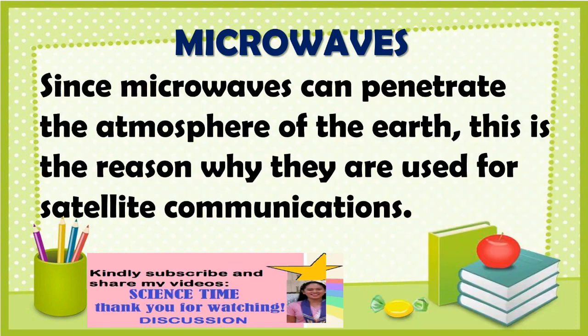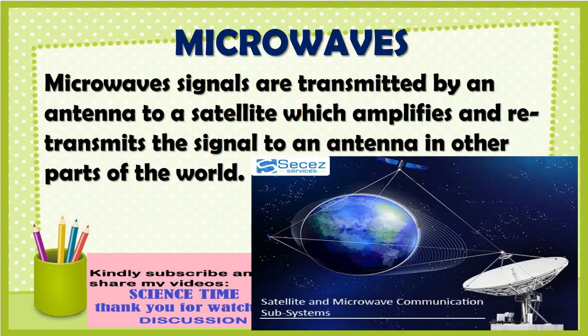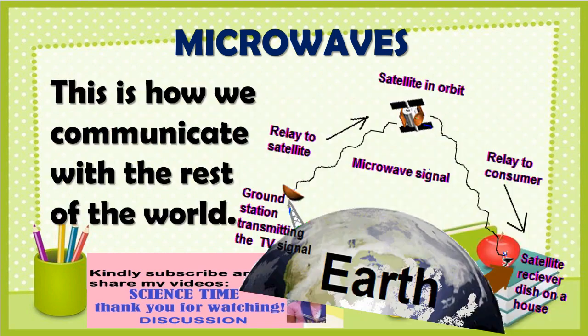Since microwaves can penetrate the atmosphere of the Earth, this is the reason why they are used for satellite communications. Communication satellites travel around the Earth at an altitude of 35,000 kilometers above the equator. Microwave signals are transmitted by an antenna to a satellite, which amplifies and retransmits the signal to an antenna in other parts of the world. This is how we communicate with the rest of the world.